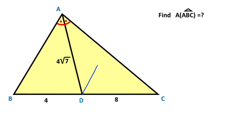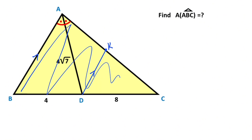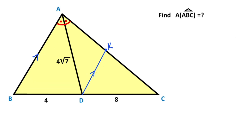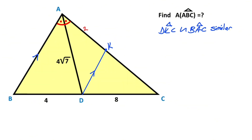First of all, if you draw a parallel line to line AB, let's call this point K. If you focus on triangle DKC, this triangle and triangle BAC are similar because they have the same angles. Therefore, since 2a is opposite the side of length 4 and 8 is opposite another side, the ratio of these two sides must be equal.